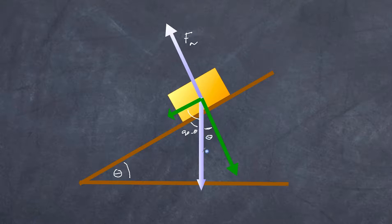Now if we use trigonometric ratios we can appreciate the fact that this component now is equal to F cosine theta.